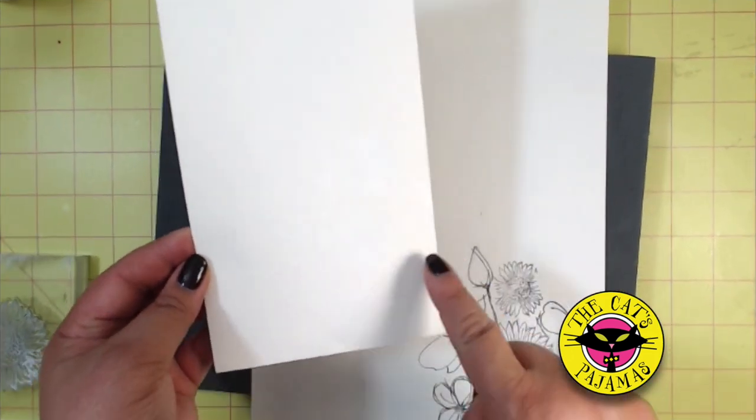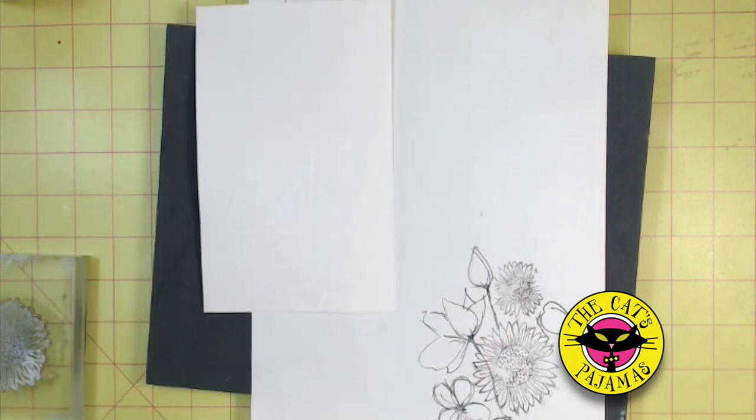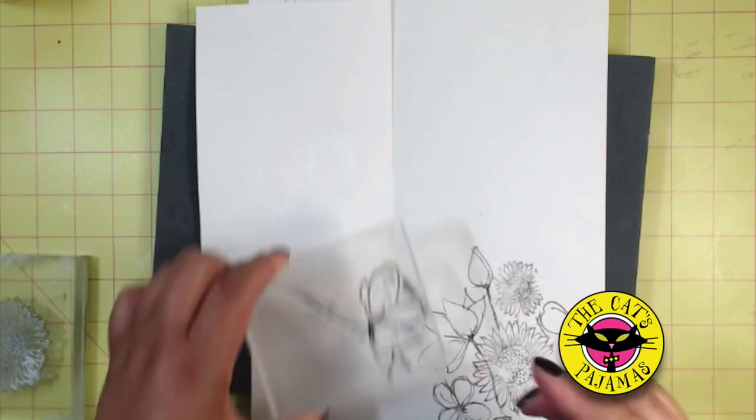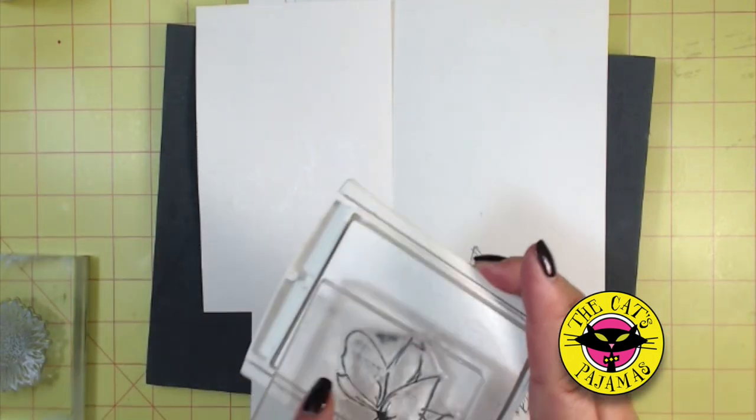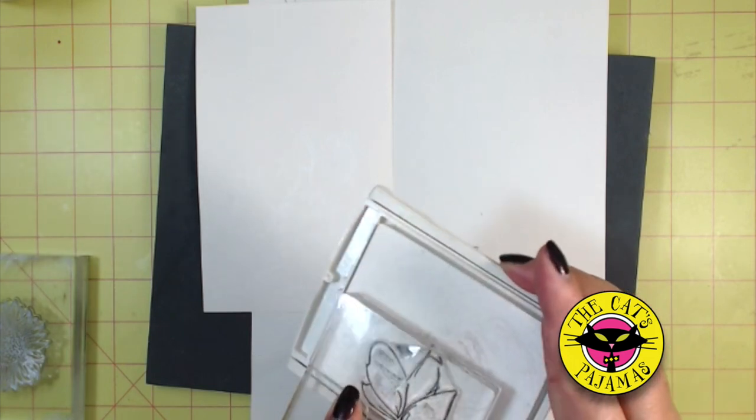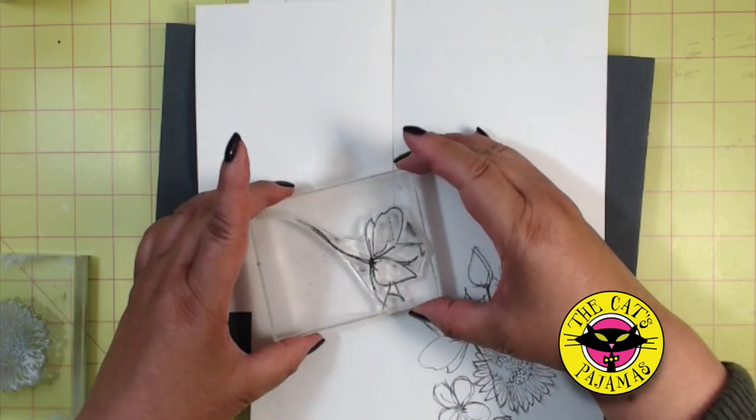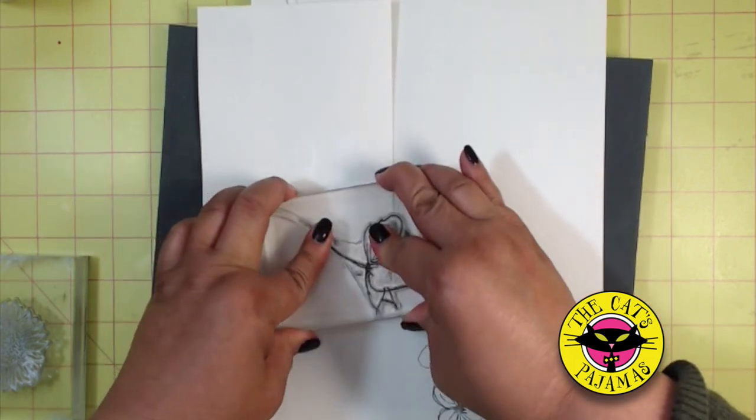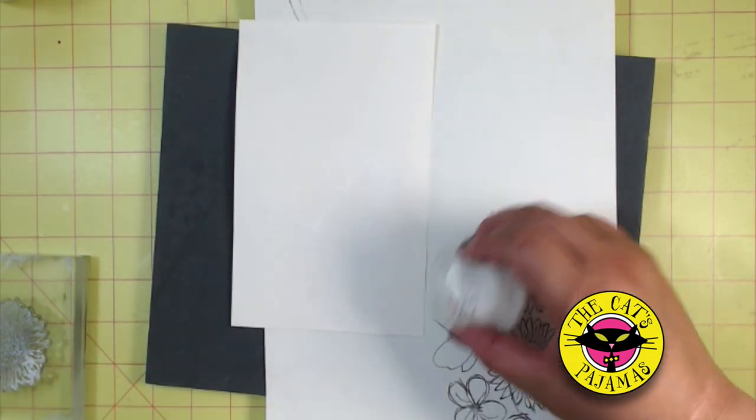So I've embossed this paper and I think I want to add another sketchy flower in this blank area. And even though it's not on the sketch, that blank spot is irritating me. So I'm just going to add the flower with just a bit of the stem, stamp, add some embossing powder, and emboss again.